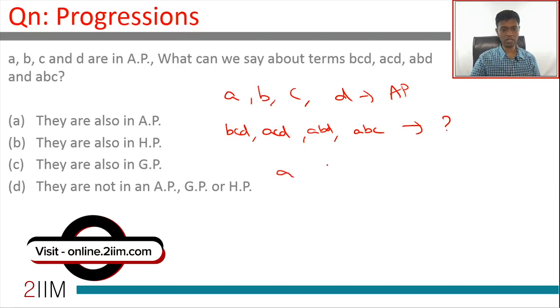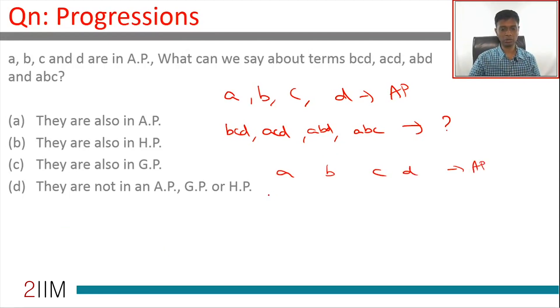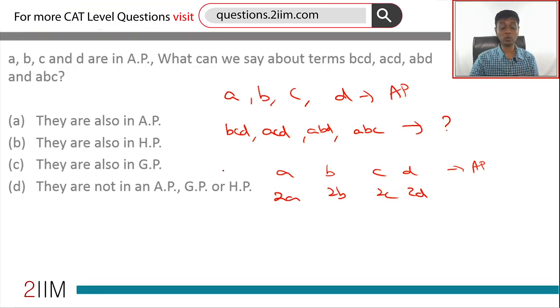You have a, b, c, d in A.P. Remember 2a, 2b, 2c, 2d would be in A.P. 5a, 5b, 5c, 5d would be - multiplying by anything will still give us an A.P. Dividing by anything would still give us an A.P. So somehow we should look to multiply or divide to retain an A.P. and then work with that.